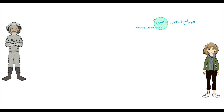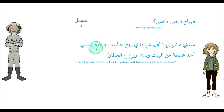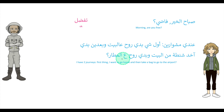Now let's look in detail. صباح الخير فاضي — good morning, are you free? تفضل — coming in. عندي مشوارين — I've got two journeys. مشوارين means two journeys. أول شي — first of all. بدي روح عالبيت — I want to go home. وبعدين — afterwards. بدي آخذ شنطة — I want to take a bag. شنطة is bag. من البيت — from home. وبيدي روح عالمطار — and I want to go to the airport.